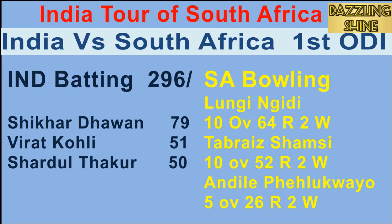First ball of the forty-sixth over, Jensen to Bavuma — top edge gone to deep fine leg for four. Third ball of the forty-eighth over, Nagidi to Thakur — he puts it away nicely through extra cover for four. Very next ball, Thakur takes the outside edge and it's gone past the wicket keeper for another boundary. The very next ball, Nagidi to Thakur — in the slot and Thakur smashes it over square leg for a maximum. At the end of 48 overs, India are 254 for eight, still needing 43 runs in two overs. Last ball of the innings, Nagidi to Thakur — plays the full toss over cover for a single and that brings his fifty; Thakur is not out on 50.